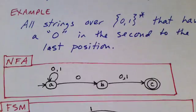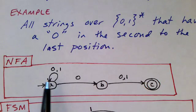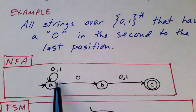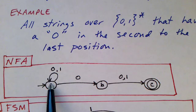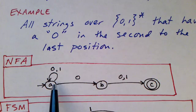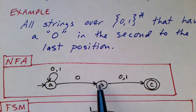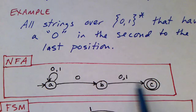With non-determinism, this machine is pretty straightforward to build. We scan a bunch of zeros and ones and somehow, magically, we know when we are at the second to the last position. And that's our non-determinism giving us that power to guess right. Then we take this transition and then we read the last zero or one and end in a final state.